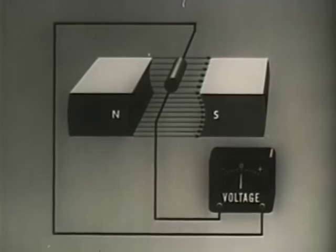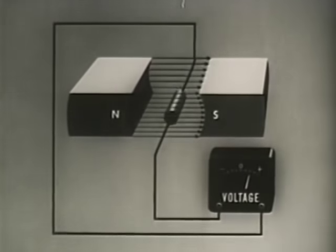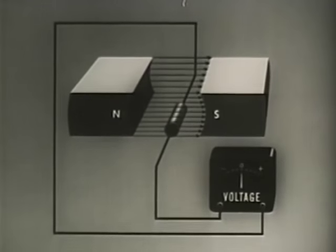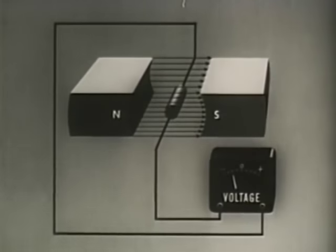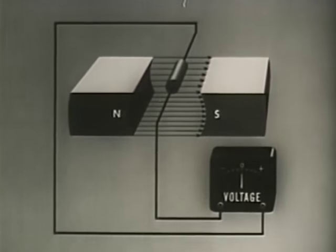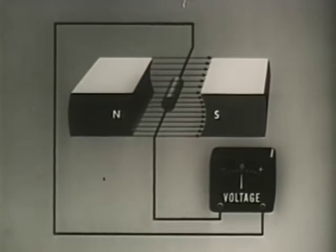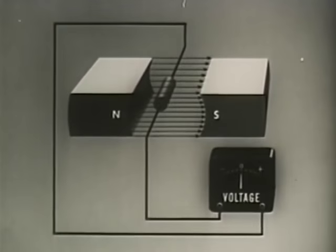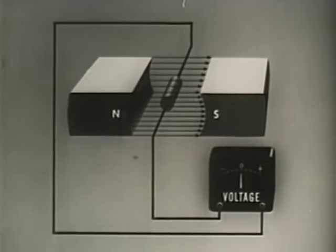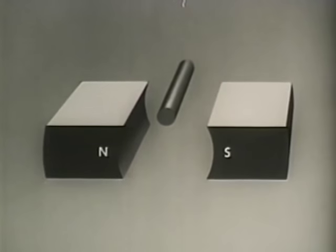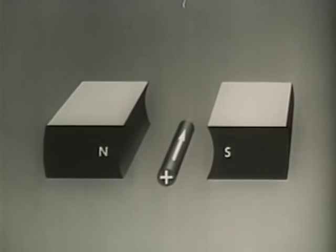Moving the conductor down through the field makes the needle of a voltmeter deflect one way, which means the EMF has one direction. Moving the conductor up through the field produces the opposite deflection of the needle — the EMF has now changed direction. Moving the conductor back and forth with the field does not make the needle deflect; there is no EMF because the conductor is not cutting the field. To illustrate the direction of current flow, the conventional symbols will be used: current flowing away from us is represented by a cross, toward us by a dot.